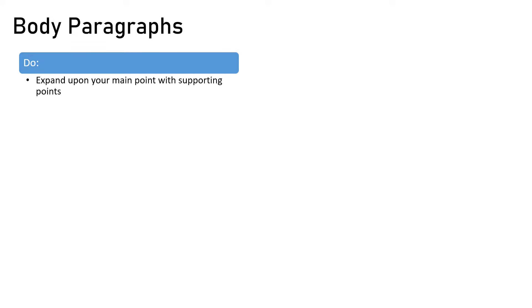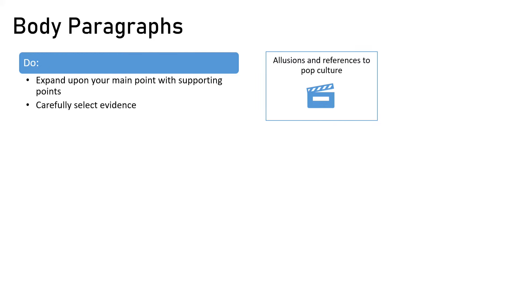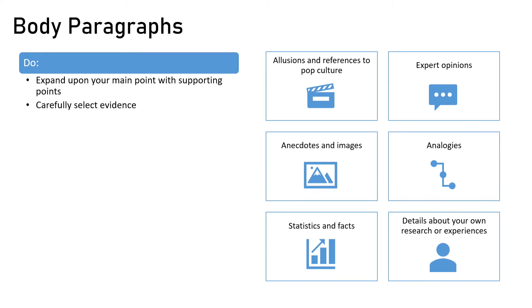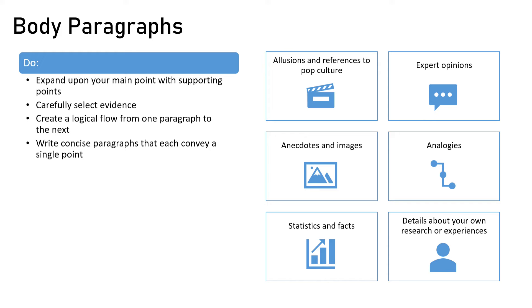There are a couple of do's and don'ts you need to know before writing your body paragraphs. You should make sure to expand upon your main point with smaller individual supporting points, and carefully select evidence to bolster your claims. These pieces of evidence can include allusions and references to pop culture such as movies, books, and music; expert opinions in the form of quotes or paraphrasing; anecdotes and images; analogies, which are especially useful for breaking down complex topics; statistics and facts; or details about your own research or experiences. You should also create a logical flow from one paragraph to the next and write concise paragraphs that each convey a single point.